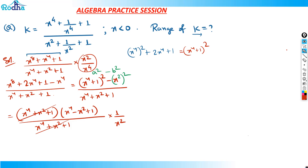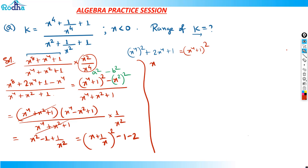Now (x⁴ + x² + 1) cancels out. What we're left with is (x⁴ − x² + 1)/x², which simplifies to x² − 1 + 1/x². To find the range of k, try to express this in the form of (x + 1/x). So x² + 1/x² equals (x + 1/x)² − 2, and therefore x² − 1 + 1/x² equals (x + 1/x)² − 2 − 1, which is (x + 1/x)² − 3.